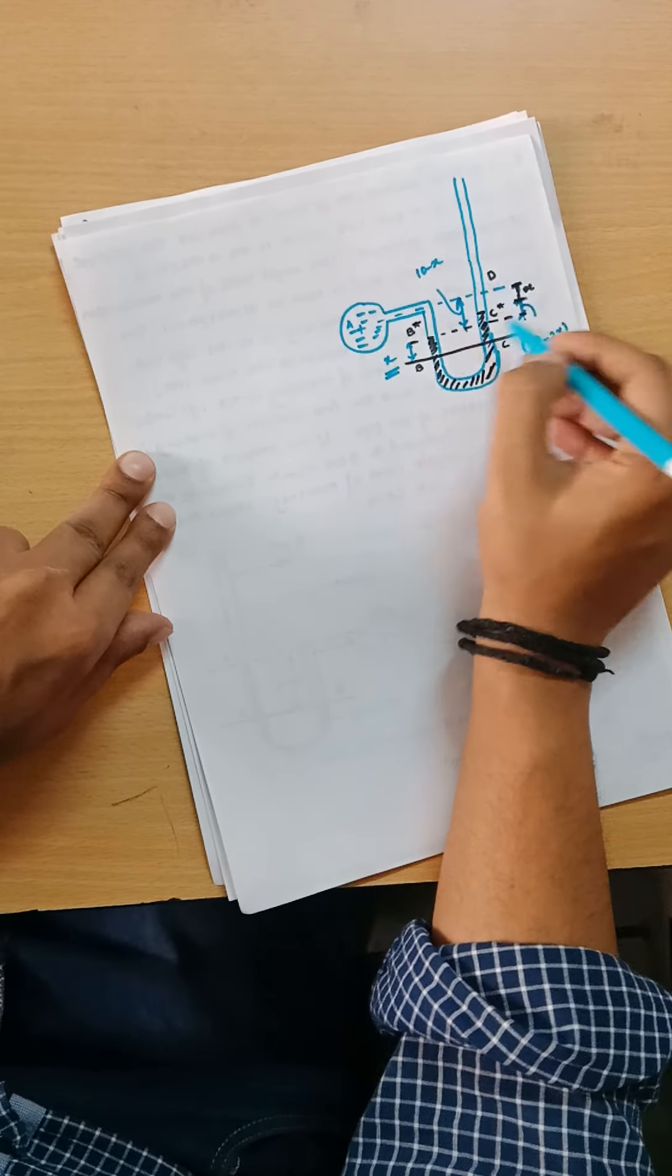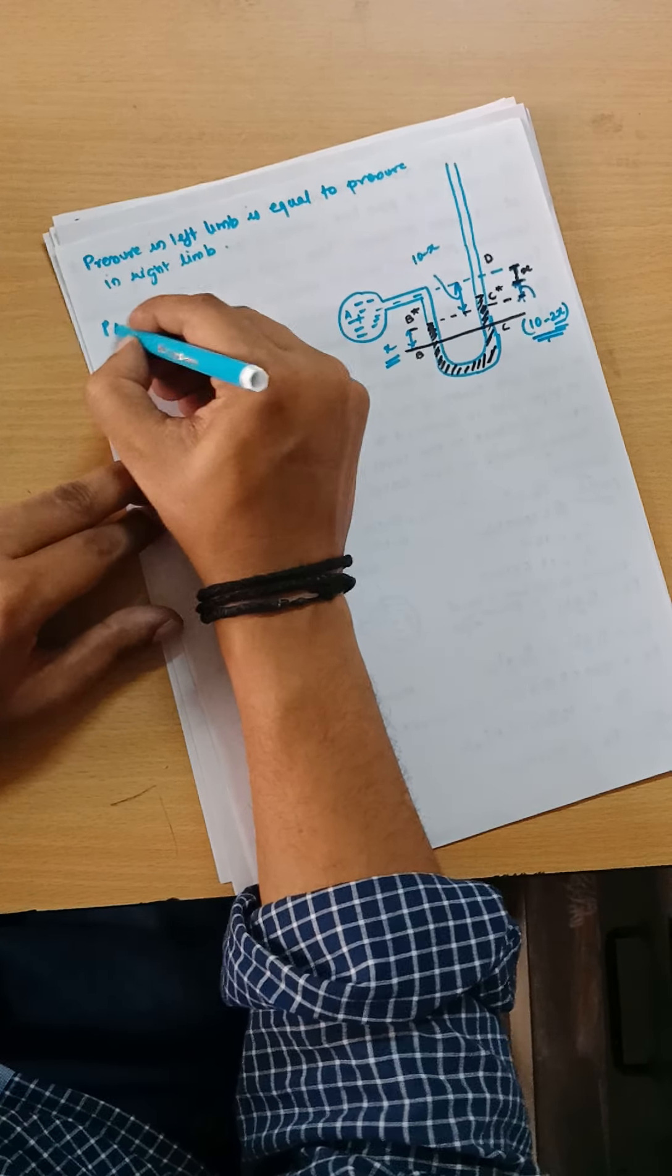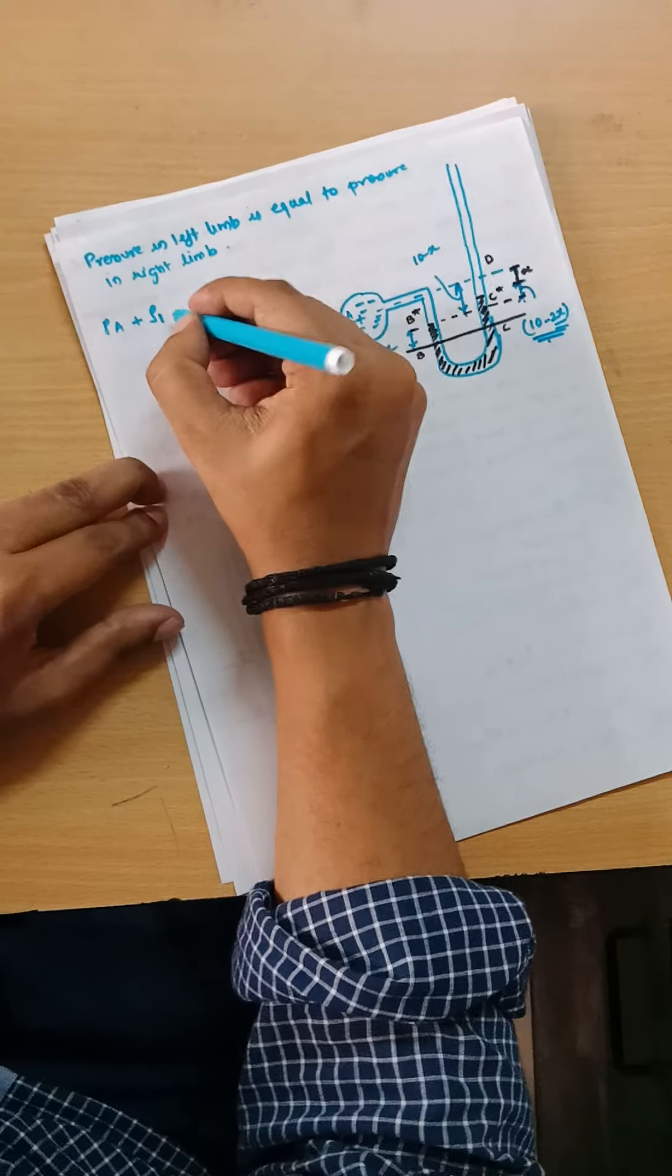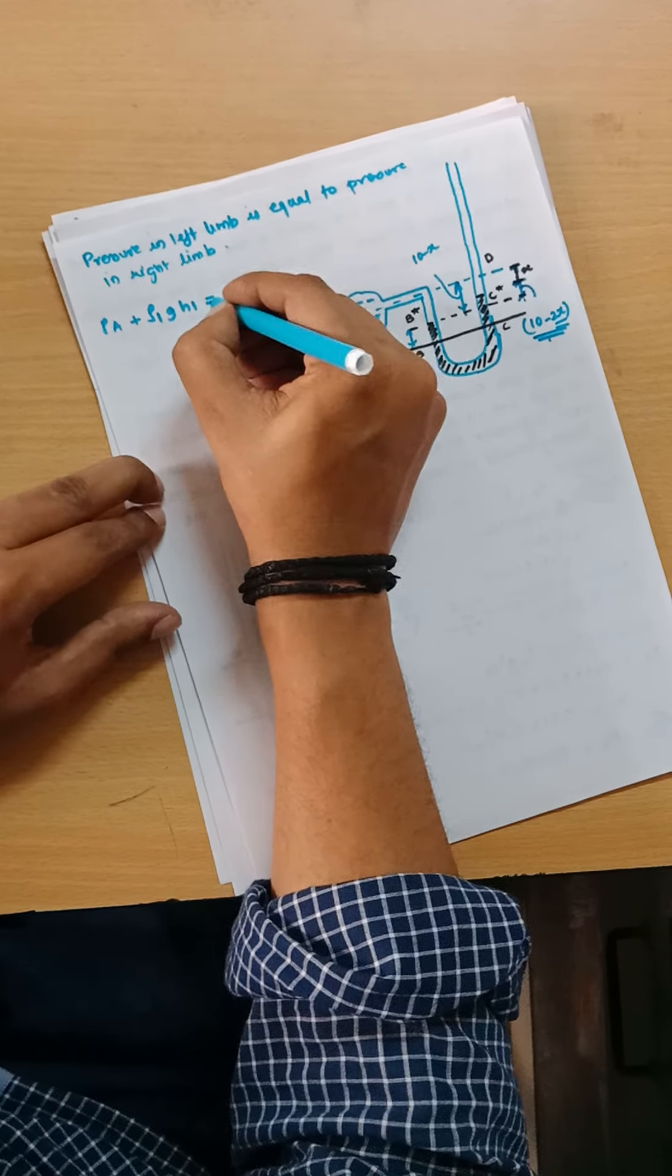What we will do is the same thing: whatever pressure is coming in the left limb, we will take it equal to the pressure coming in the right limb. So we will put the value: pressure in left limb equals pressure in right limb.